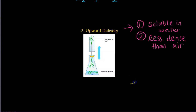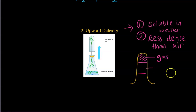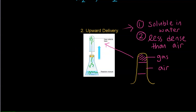Let's do a recap. When we discuss the upward delivery method, we split the container into two chambers: the first chamber being the gas that we want, and the second portion being air. The gas is less dense than air, and hence it floats on top. Because the gas that we want is less dense than the air portion, it actually floats up on top here. And hence you can use the upward delivery method to collect the gas that we want.